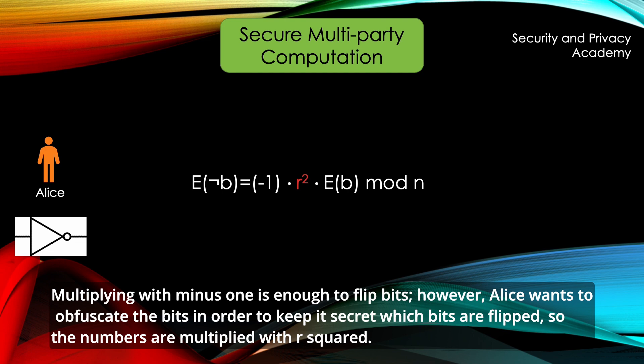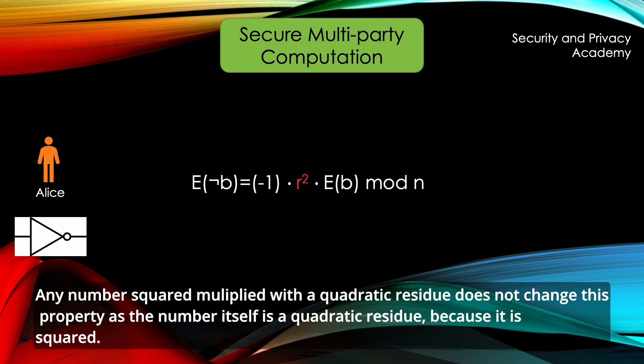However, Alice wants to obfuscate the bits in order to keep it secret which bits are flipped. So the numbers are multiplied with R squared. Any number squared multiplied with a quadratic residue doesn't change this property as the number itself is a quadratic residue because it is squared.